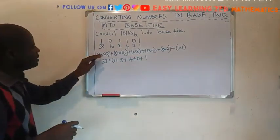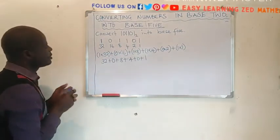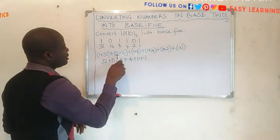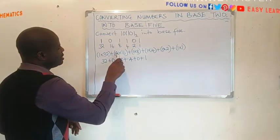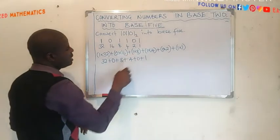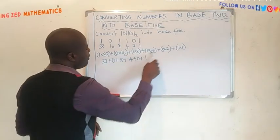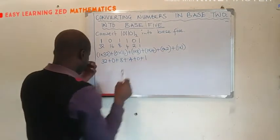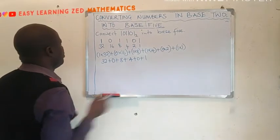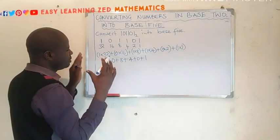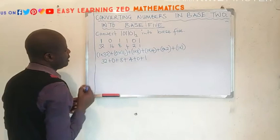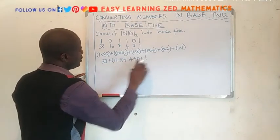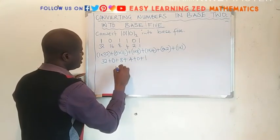Now, we have found the product of these expressions inside the brackets. This one has given us 32, 0 by 16 has given us 0, 1 by 8 has given us 8, 1 by 4 has given us 4, 0 by 2 has given us 0, then 1 by 1 has given us 1. Now, let's find the sum of these products.